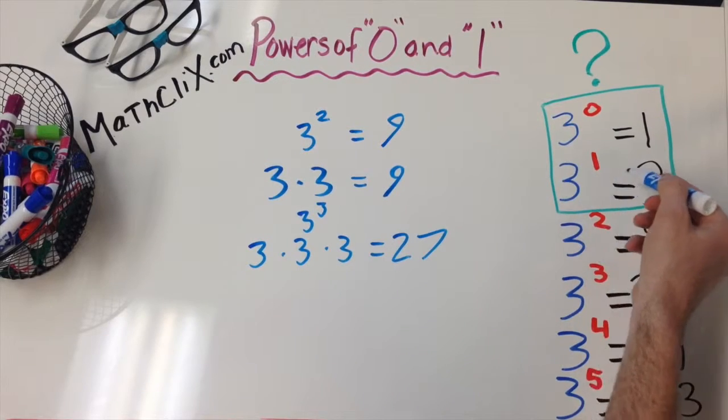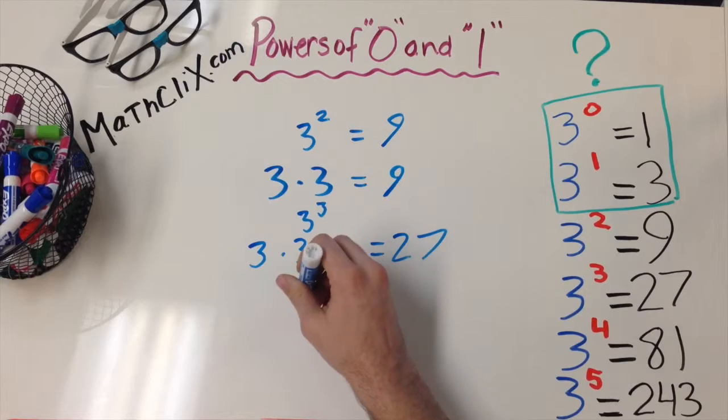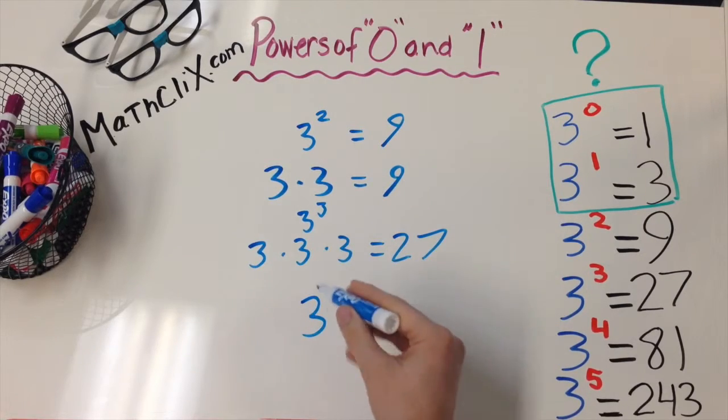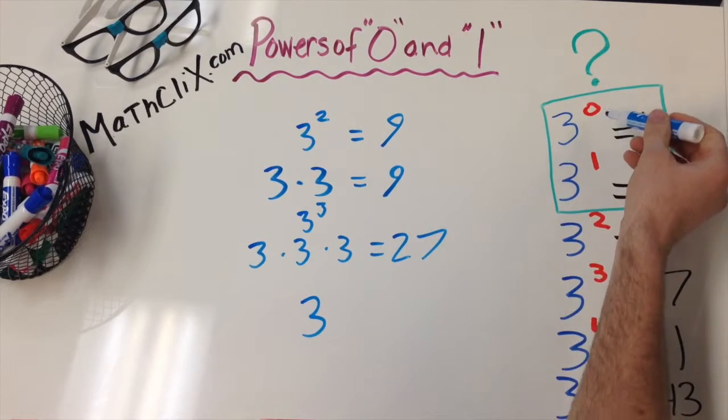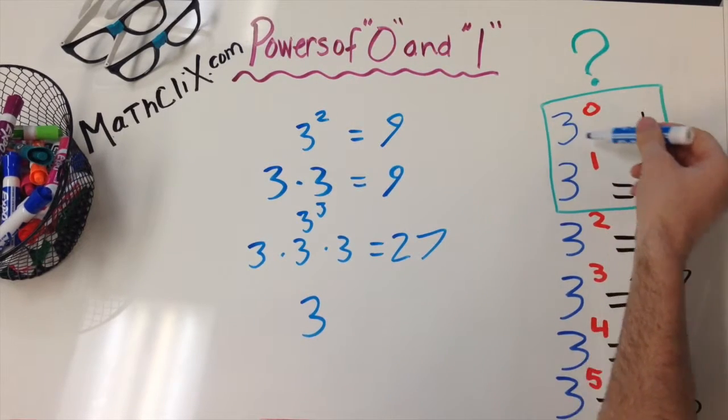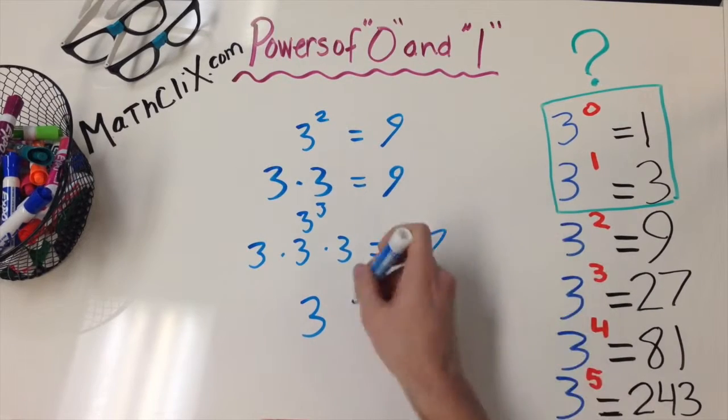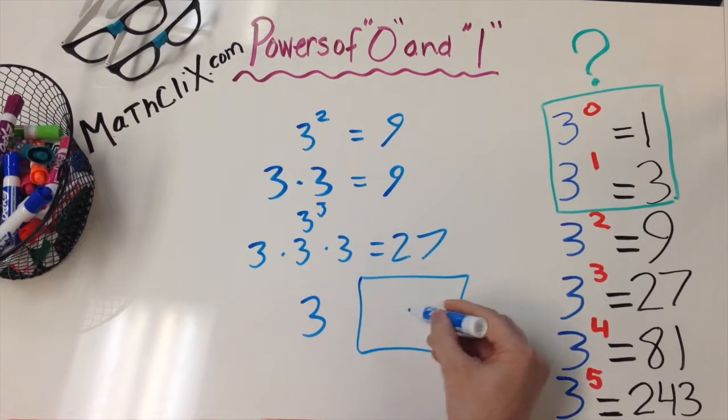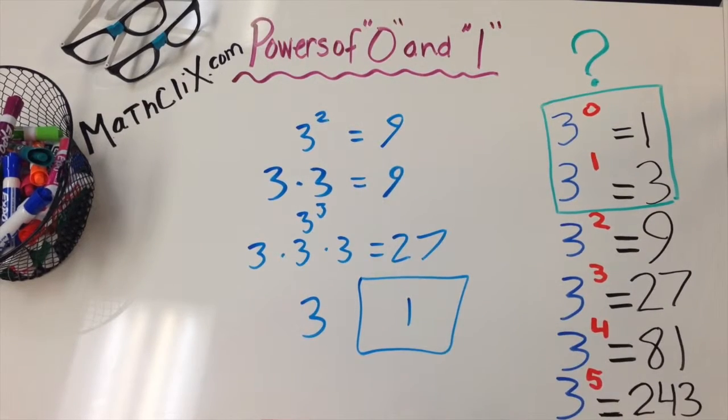But what about 3 to the first equals 3? Well, maybe it makes sense that 3 is just one 3, so it's itself, but what about this 3 to the 0 being 1 business? There's no 3's. How does that equal a 1?